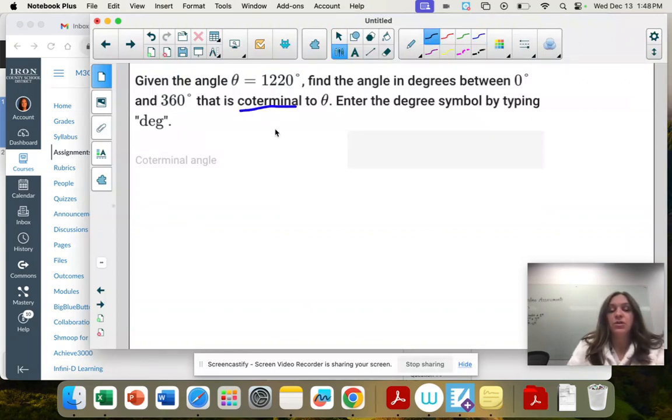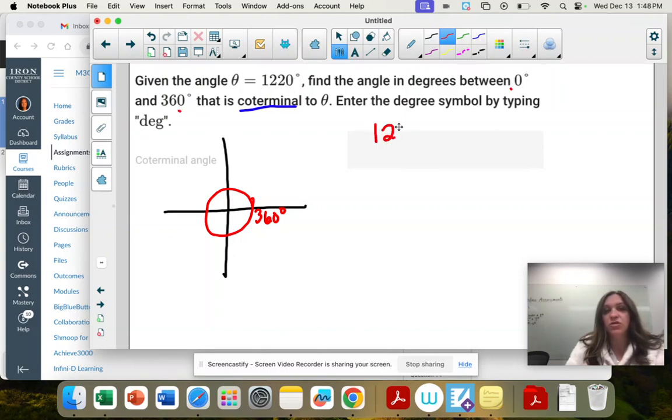I want you to think about a circle. It goes all the way around 360. And so to get this number in between zero and 360, we're going to start subtracting.